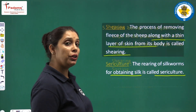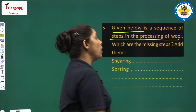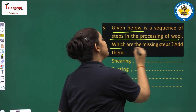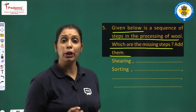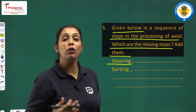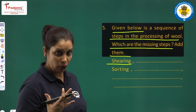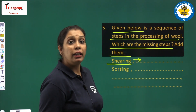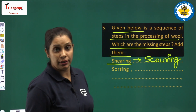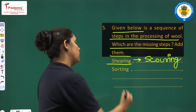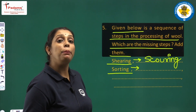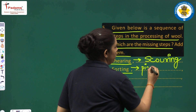Next question: given below is the sequence of steps in the processing of wool. Which are the missing steps? Add them. The first step is shearing — removal of the fleece along with a thin layer of skin. After shearing comes scouring. Write down scouring. Scouring means washing of the removed hairs. After scouring, sorting. And after sorting we do removal or picking of burrs.